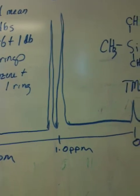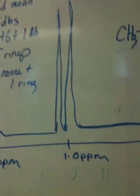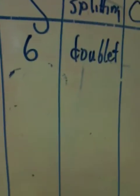My first real peak from the sample is at 1 part per million, with an area of 6. The splitting pattern is a doublet — write 'doublet,' not 'two,' because that distinguishes it from the area. Remember: the area tells you what is here; the splitting tells you what is near.